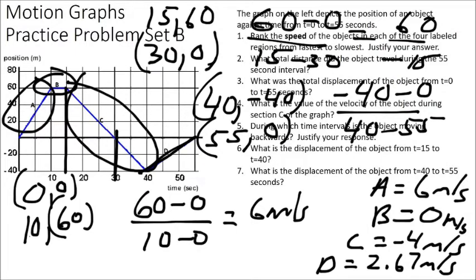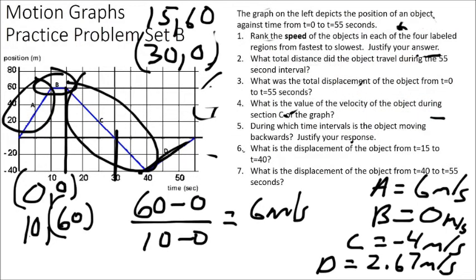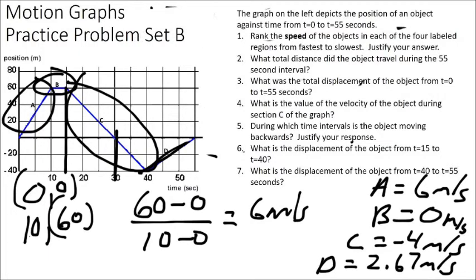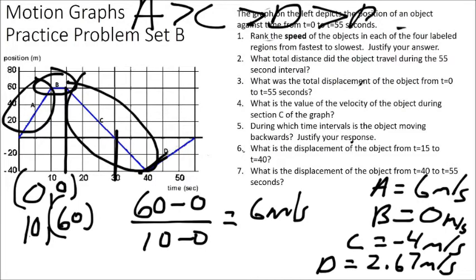To find velocity from a position-time graph, find the slope — that gives average velocity. This question asks us to rank speeds, so direction doesn't matter. Only looking at the magnitude of the numbers: A (6) is greater than C (magnitude 4), which is greater than D (2.67), which is greater than B (0, not moving).